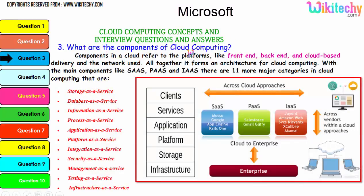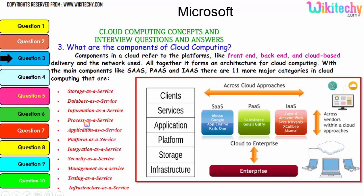Now let's talk about the components of cloud computing. Components in a cloud refer to platforms like front-end, back-end, cloud-based delivery, and the network — all together they form an architecture for cloud computing. The main components are Software as a Service, Platform as a Service, and Infrastructure as a Service. There are 11 major categories in cloud: storage as a service, database as a service, information as a service, process as a service, application, platform, integration, security, management, testing, and infrastructure.